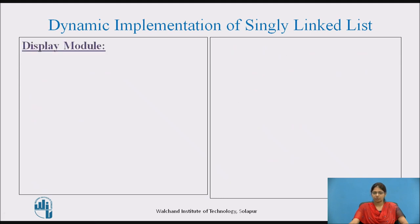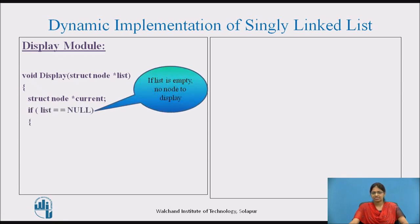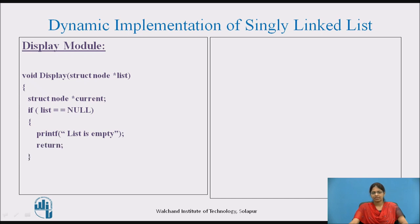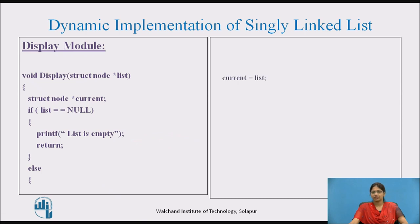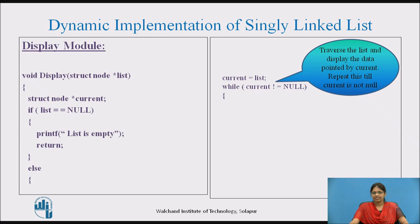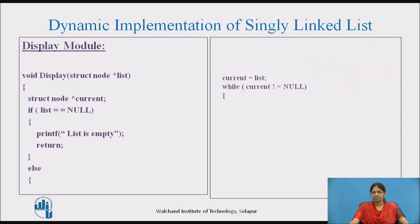The last module is the display module. We declare a temporary pointer current and first check if the list is empty. If empty, we display the message that the list is empty and return. Else the list is not empty, so we initialize current to the list and traverse till current is not null. Each time the condition is true, we print the data pointed to by current and move current to the next node. This repeats till current equals null.